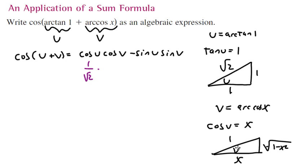Minus sine of u—sine is opposite over hypotenuse, so that's 1 over radical 2. Times sine of v, that's opposite over hypotenuse, so that's the square root of 1 minus x squared. That's pretty sweet. They both have a common denominator of radical 2, and 1 times x is just x minus the square root of 1 minus x squared.